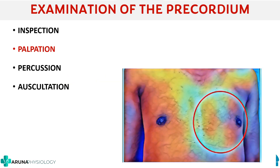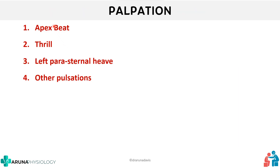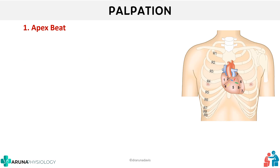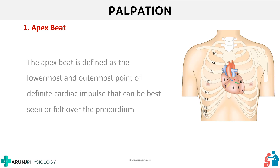Next we move on to palpation. In palpation too, we have to check four parameters: the apex beat, thrill, left parasternal heave, and other pulsations. We will see each one by one. Apex beat is defined as the lowermost and outermost point of definite cardiac impulse that can be best seen or felt in the precordium.